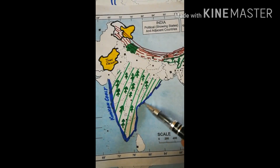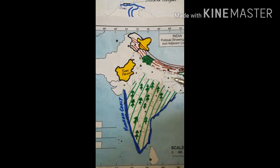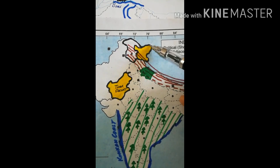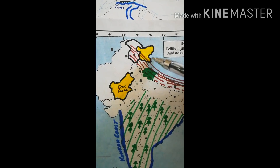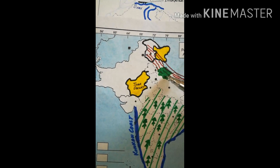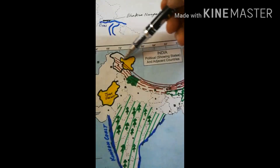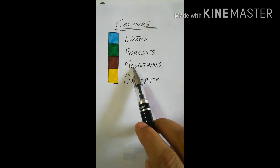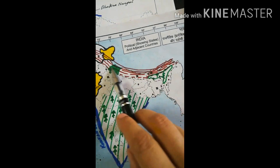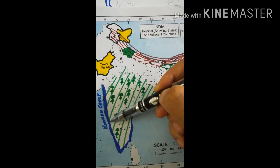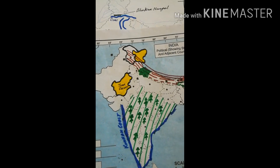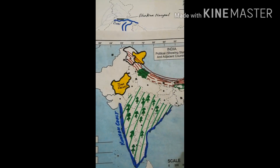Basically students, if you want to show any feature on the map, you can simply use color. For example, even without writing anything, yellow tells you there is desert in Ladakh. Green color means forests — so this area in Uttarakhand shows forests. Brown means mountains — so the Himalayan mountains are shown in brown. And this blue area indicates a water body; the Bay of Bengal is shown in blue. I think this concept is easy now.